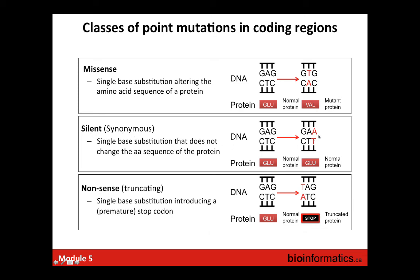There are also silent or synonymous mutations, which often happen in the third position of a codon, called the wobble position. Many amino acids have codons that are the same in the first two bases but differ in the third, so even though the base is different, we don't see a change in the protein. In cancer we generally don't think synonymous mutations are functional—rare exceptions include altering a splice site—so we filter these out and focus on missense and nonsense mutations.